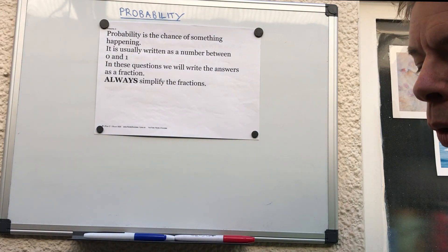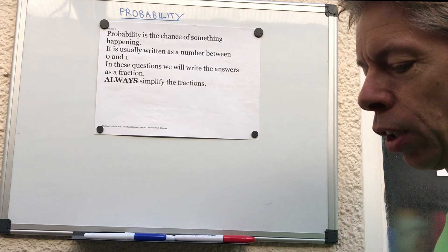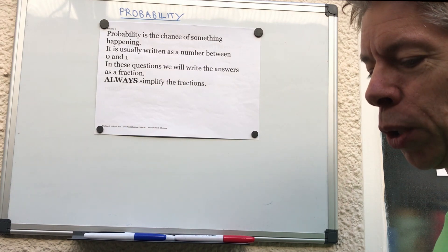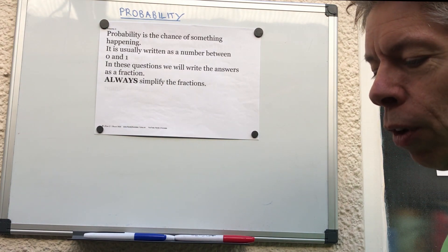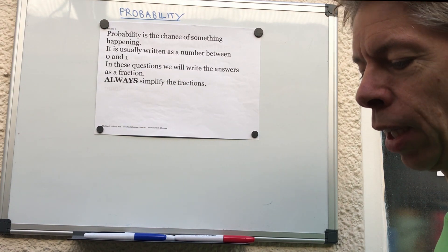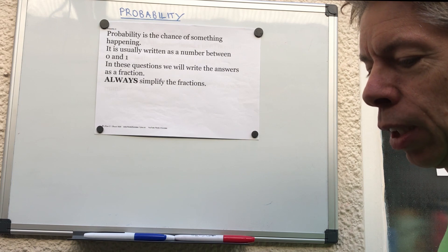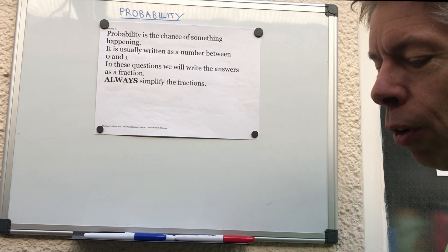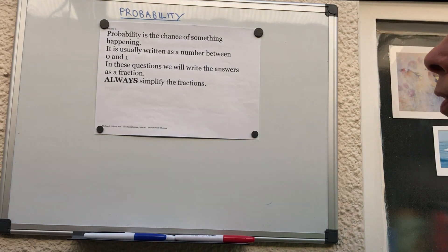Same with rolling a die — you've got six different options. So the probability of rolling a three is one out of six, and the probability of rolling an even number is going to be a half.